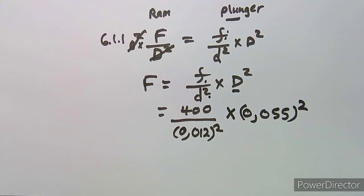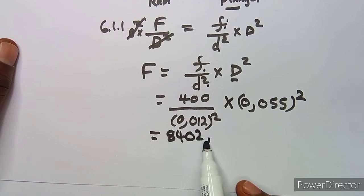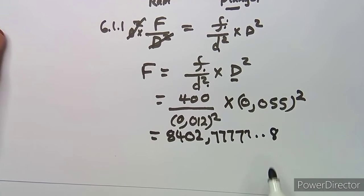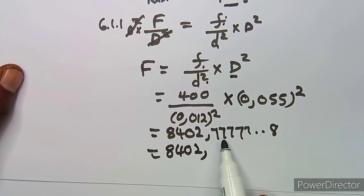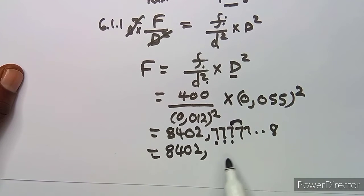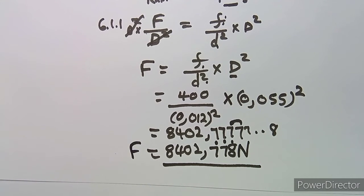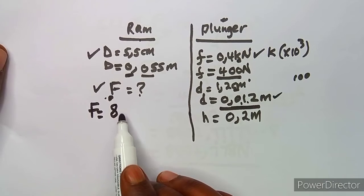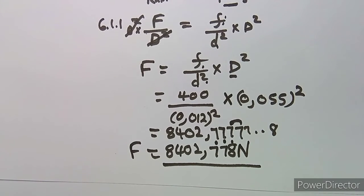Using a calculator, we obtain 8402.7777... newtons. Rounded to three decimal places, this becomes 8402.778 newtons. So the force exerted on the ram is 8402.778 newtons. You can write it in kilonewtons if you want, but leaving it in newtons is also fine. That is what you obtain on question 6.12.